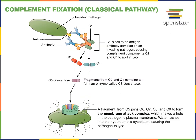Antibodies can also stimulate complement fixation. In the classical pathway for activation of the complement cascade, antibodies mark antigens on the surface of the pathogen, leading to the activation of the C1 complement protein. C1 will then stimulate C2 and C4 to activate C3, and from that point on C3 will join together with C5, C6, C7, C8, and C9, forming the membrane attack complex. A portion of C3 will also function as a chemokine, attracting phagocytic cells to come and engulf the particles that remain after the pathogen has been killed by the membrane attack complex.